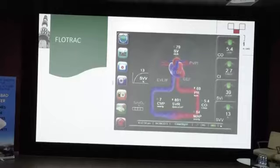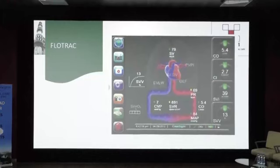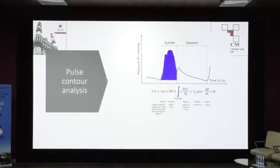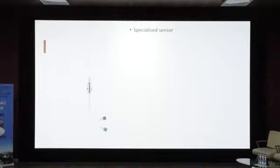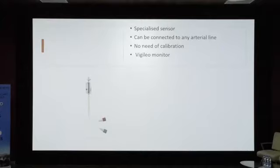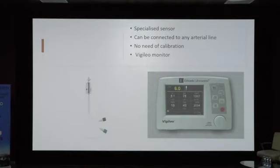FlowTrack uses the same principles but requires no calibration — its biggest advantage is continuous monitoring without calibrations. Instead of an external dye or lithium, it uses an inbuilt continuous thermodilution curve combined with pulse contour analysis. A specialized sensor connects the FlowTrack machine to the monitor and can be connected to any arterial line — it is not system-specific. It comes with an attached Vigileo monitor displaying cardiac output, stroke volume, stroke volume index, and resistance index.